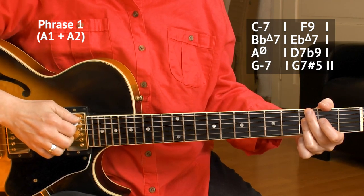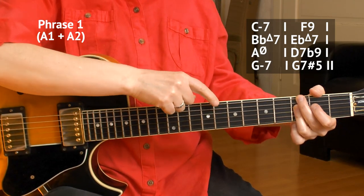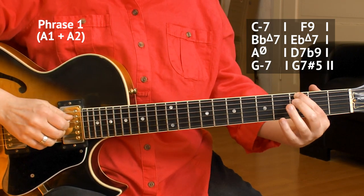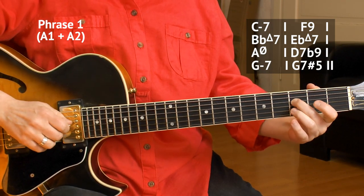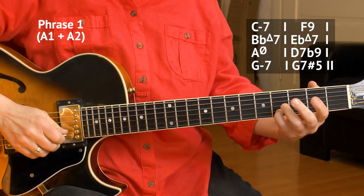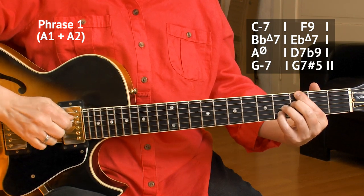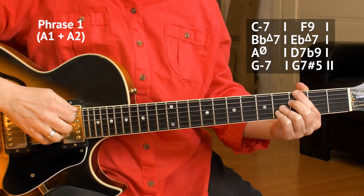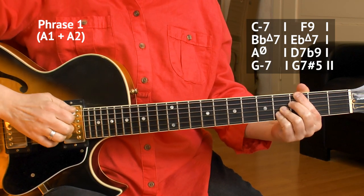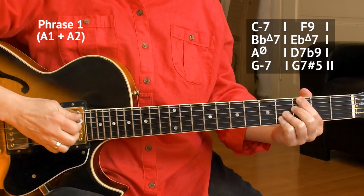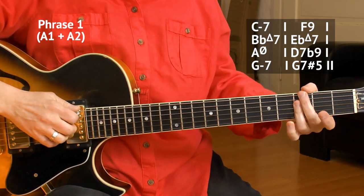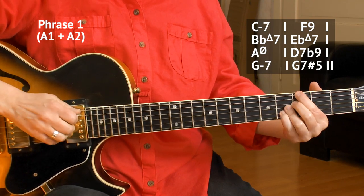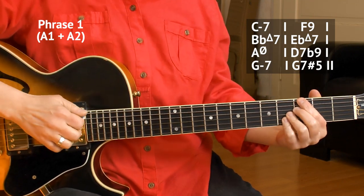And now G7 sharp 5, that leads us back to the C minor, to the beginning again. So, G is here obviously. F, B, and D sharp, or E flat. 3, 3, 4, 4. And I play a break again. So, the last 2 bars. G minor 7. G7 sharp 5. So, that was the entire A section, A1 section.